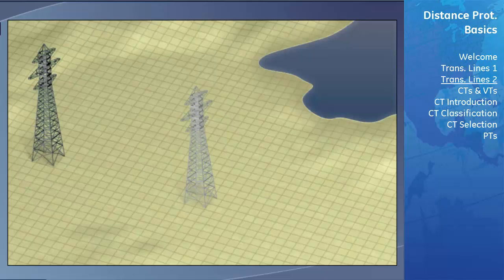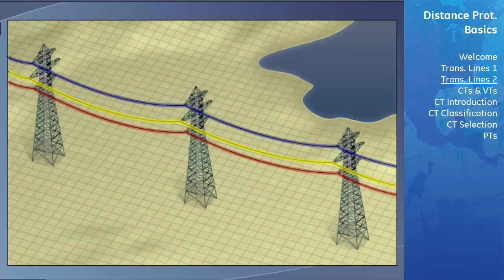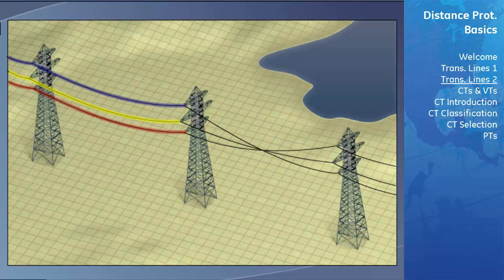Transmission lines in fault calculation studies are generally considered to have conductors where all three phases are symmetrical with respect to each other and the ground — that is, they have identical characteristics. However, in the common configuration where all three phases are hung vertically, the characteristics of the different phases are not actually symmetrical due to the difference in height of each phase. This is the reason that some line sections are transposed, where the order of the transmission lines is reversed so that these characteristic differences can balance off and the total line can be approximated as symmetrical.